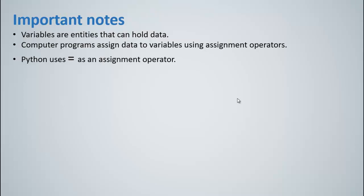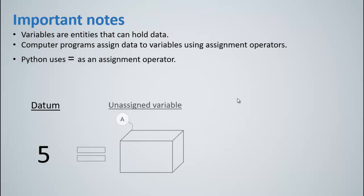Python uses equal sign as an assignment operator. So for instance, if we have 5 as a datum and we would like to assign it to a variable, let's say variable a, we would write down a equals to 5 to assign 5 to an assigned variable which is a.